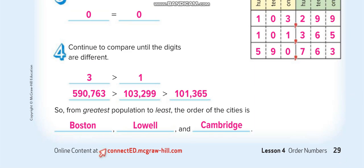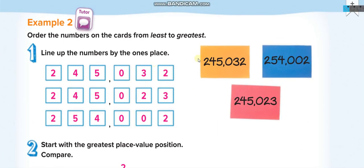Let's move to page 30. We have three numbers and we have to order them from least to greatest. First, we write all of them and compare place by place. At one position, all are the same; at the next, four, four, five — five is greater than four, so that one is the greatest and will come last. From the remaining two, comparing further: three versus two, so two is least, making that number first. The order is the pink number first, then the middle one, then the greatest last.